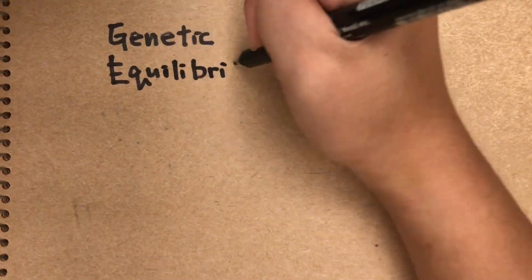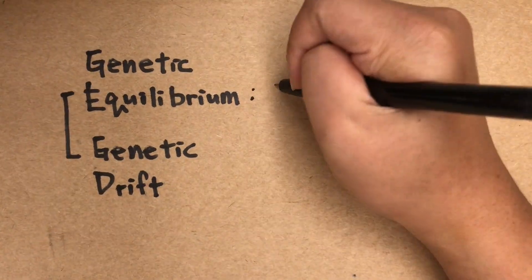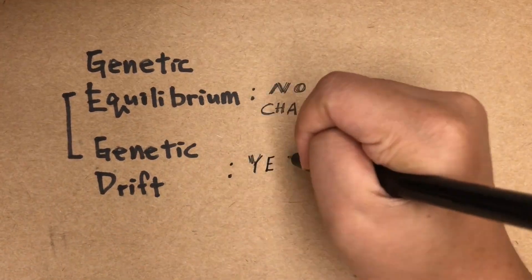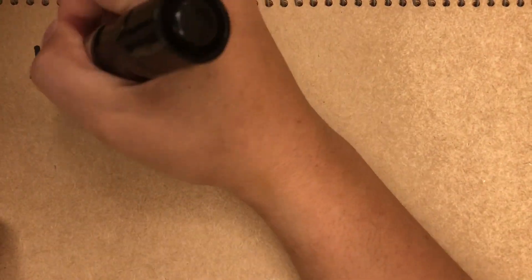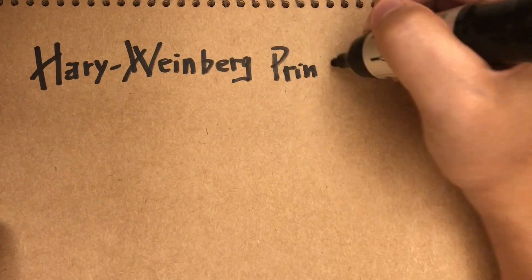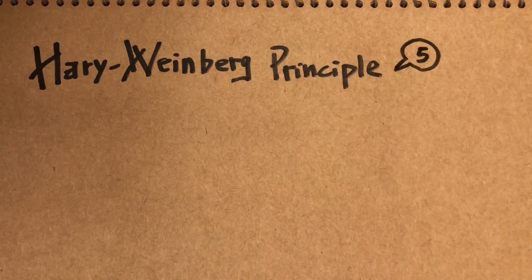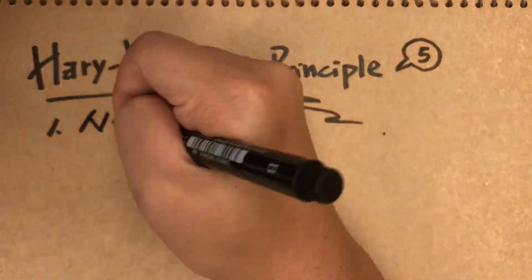Genetic equilibrium is exactly opposite to genetic drift. It means no change in allele frequency. The Hardy-Weinberg principle explained that under five conditions, evolution will not occur. One, no natural selection.